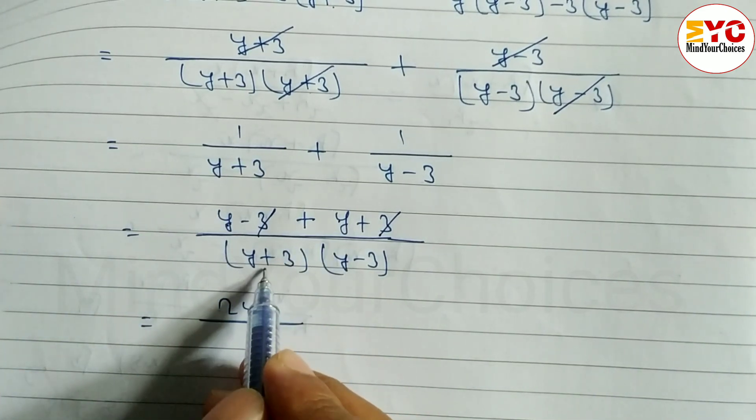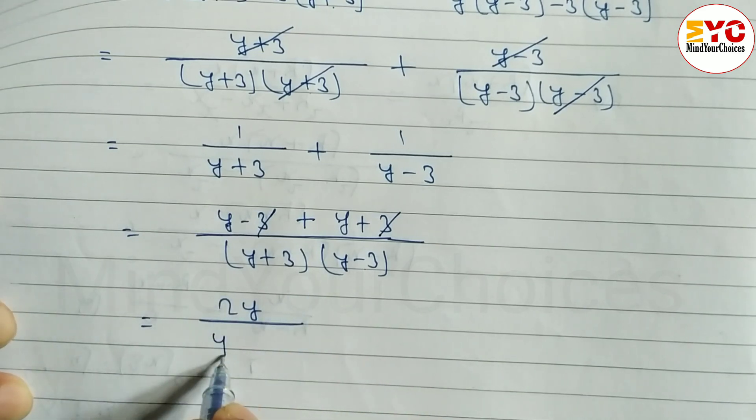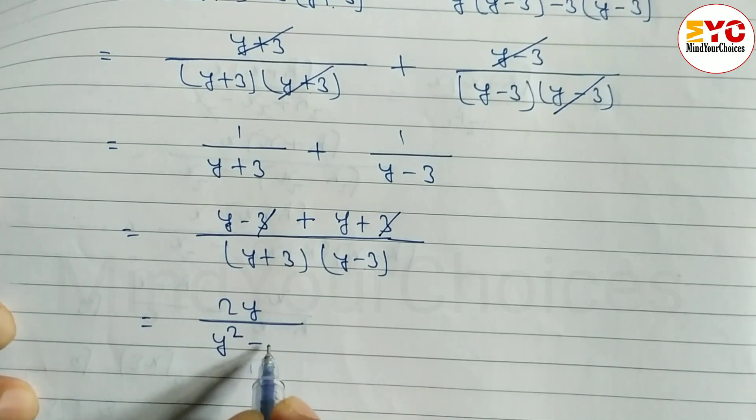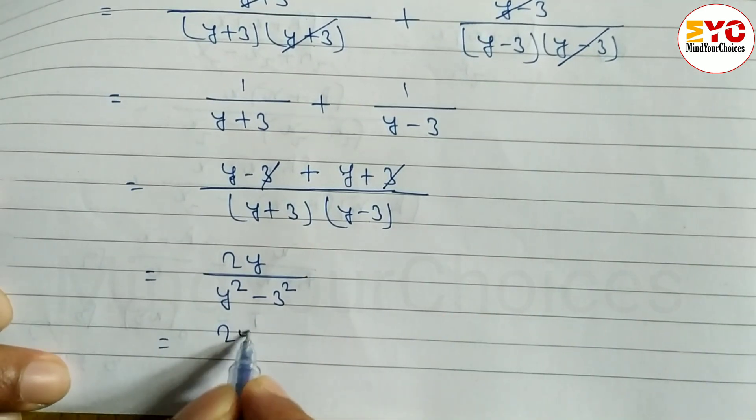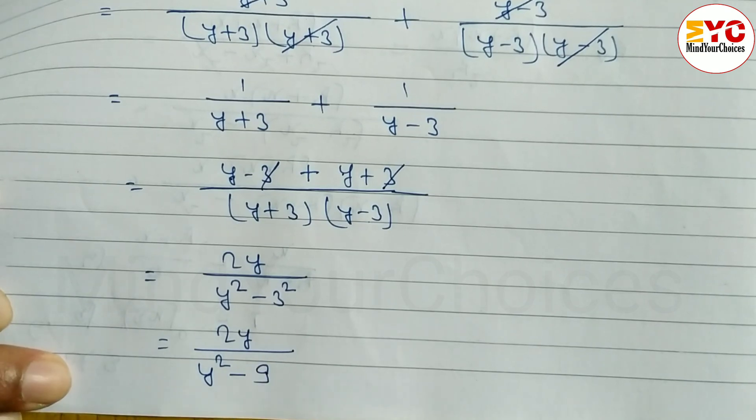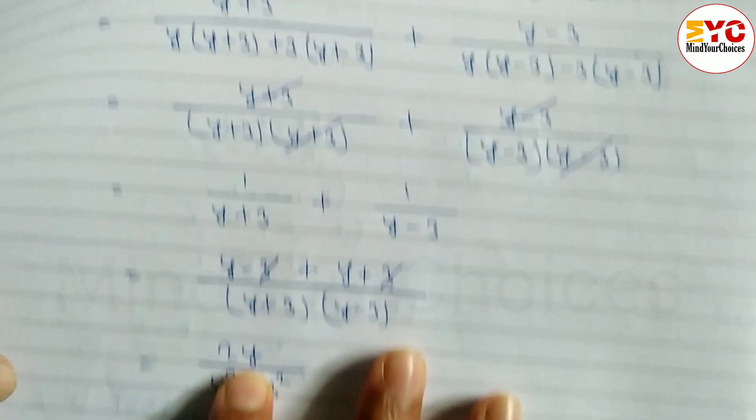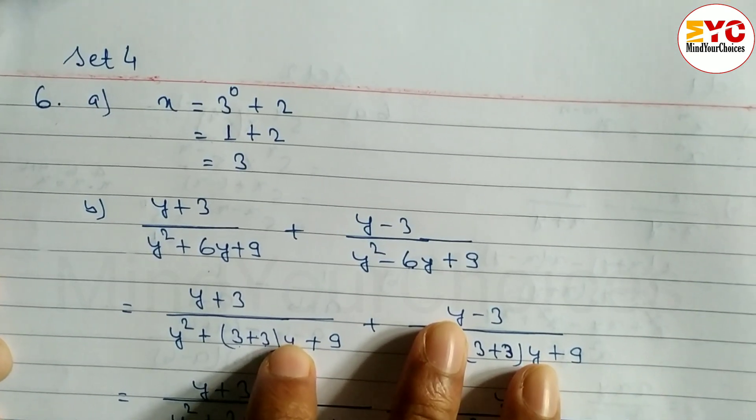2y divided by y square minus 9. Hope you understand question number 6 from Set 4.